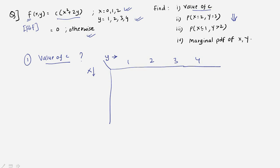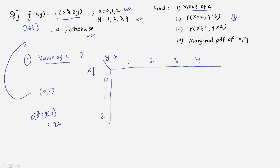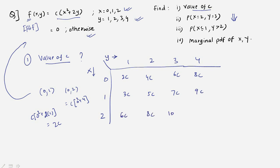Y ranges from 1, 2, 3, and 4, and x takes values 0, 1, 2. Substituting x=0, y=1 gives c(0² + 2×1) = 2c. For x=0, y=2: c(0 + 4) = 4c. Continuing to fill the table: 6c, 8c for the rest of that row; then 3c, 5c, 7c, 9c; and the last row gives 6c, 8c, 10c, 12c.